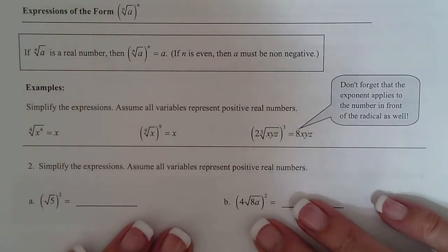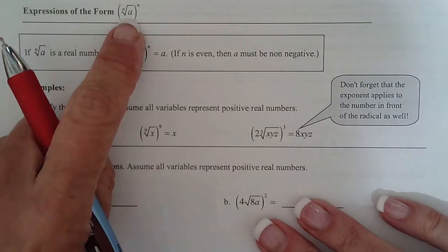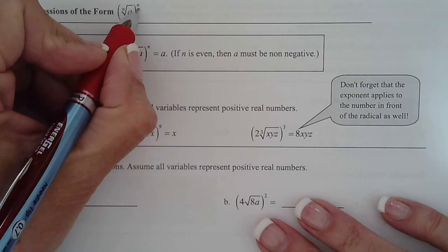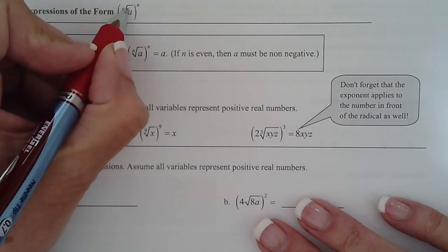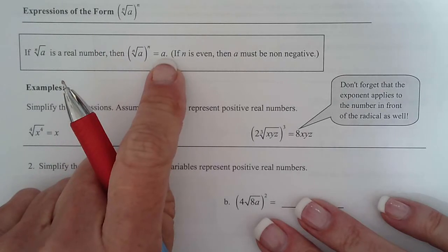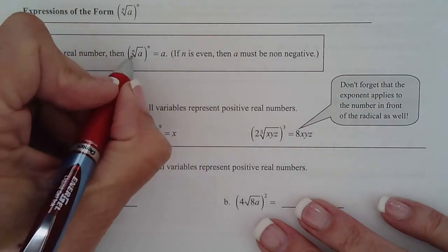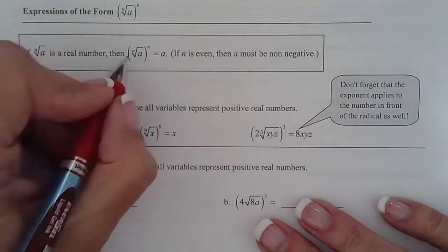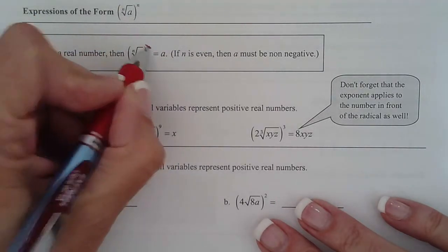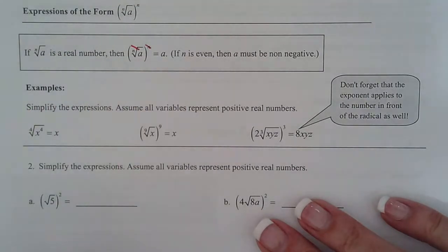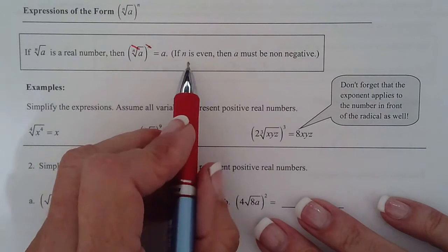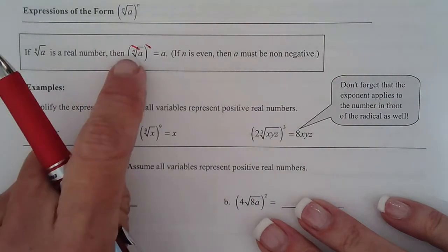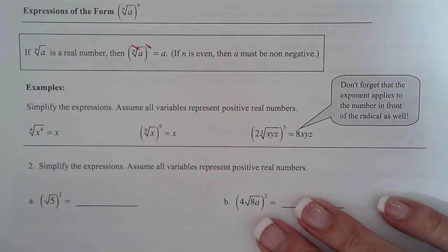Expressions of the form nth root of a to the n. Do you know that these undo each other? This is to the nth power, this is the nth root. They undo each other, and we just get whatever's underneath the radical. Think of square root and square - they're opposites. They undo each other. Cube root and cube, they undo each other. Remember if n is even, then a must be non-negative, because answers to even indices are always positive.